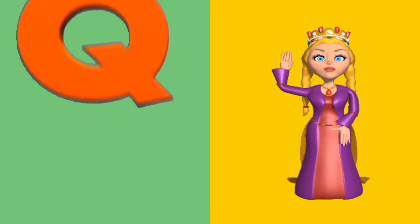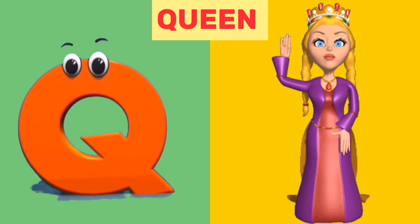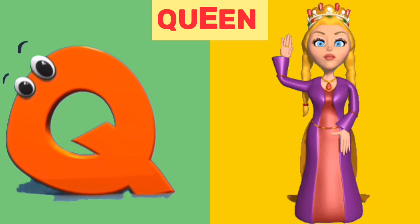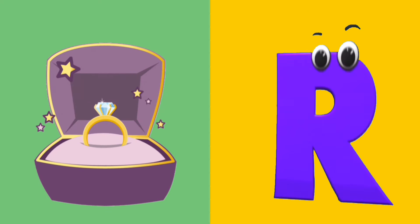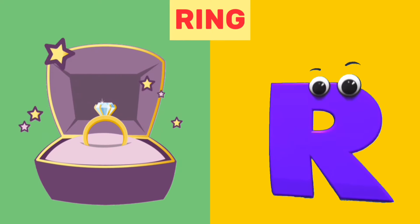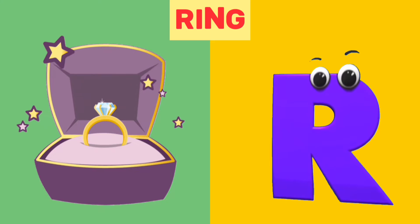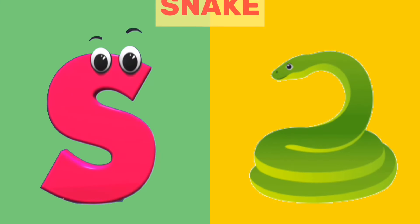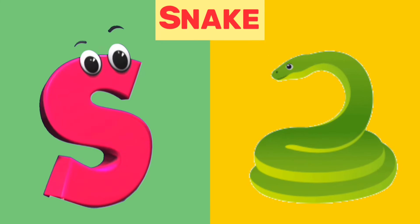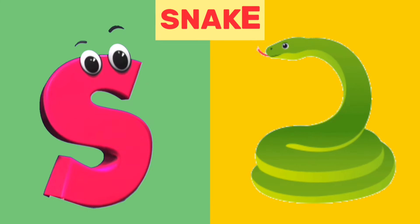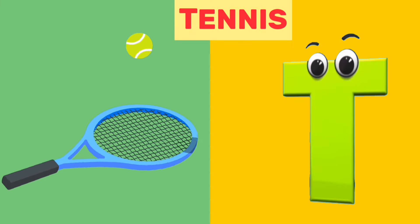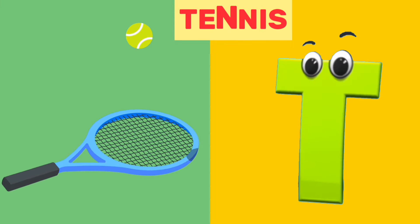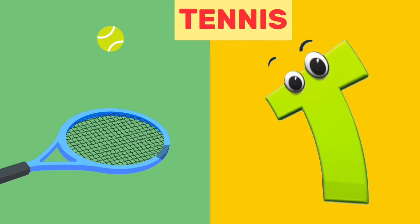Q is for queen. Q, q, queen. R is for ring. R, r, ring. S is for snake. S, s, snake. T is for tennis. T, t, tennis.